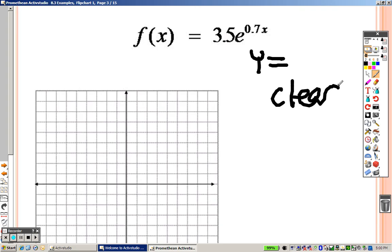This is 3.5, so type in 3.5, and the E. To get to that E, that Euler number, the E, you need to press the second key and then press the LN key.